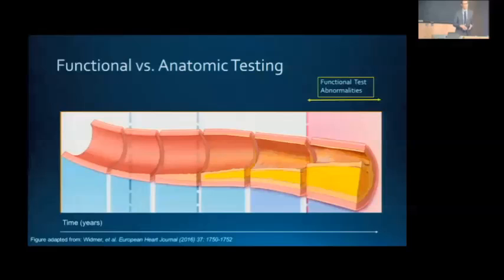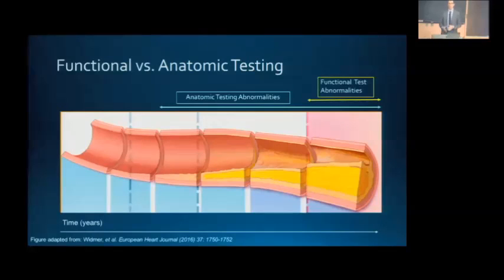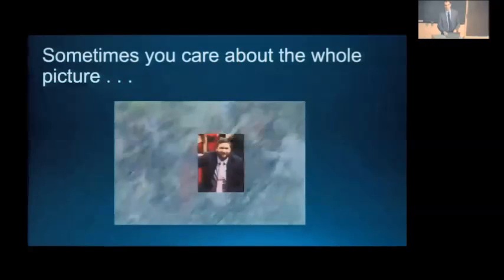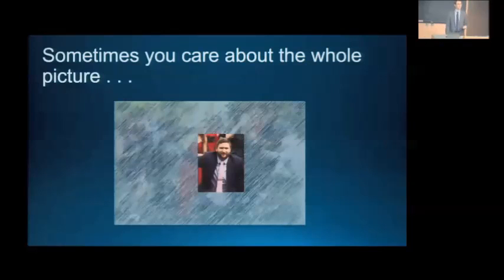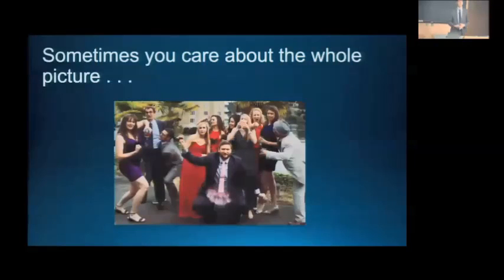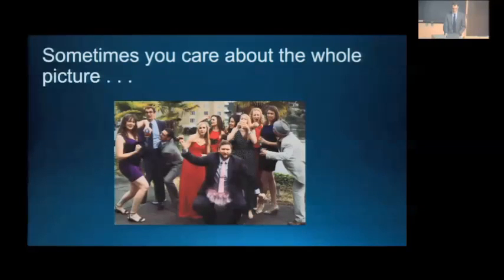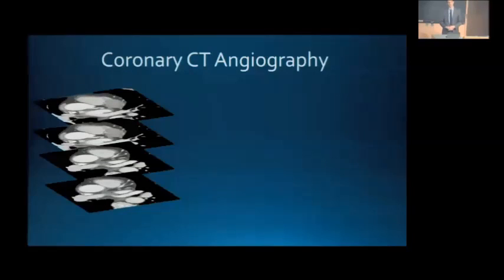Transitioning from functional to anatomic testing: with functional testing we look for obstructive coronary disease and detect ischemia, while with an anatomic approach we can see the whole picture of coronary artery disease. Sometimes we do want to see the whole picture — much like how a partial photograph loses important context. Now let's turn our attention to coronary CT angiography.